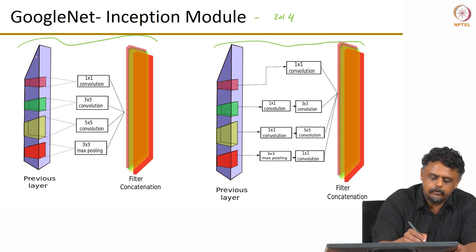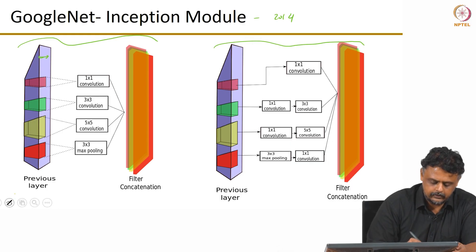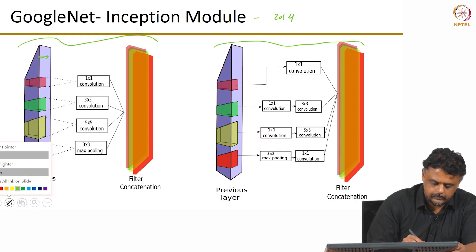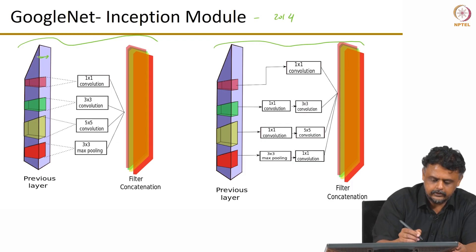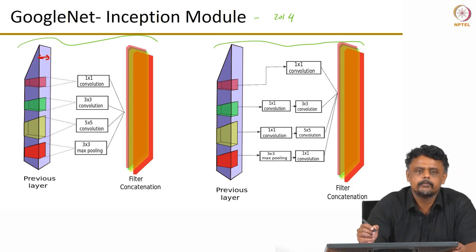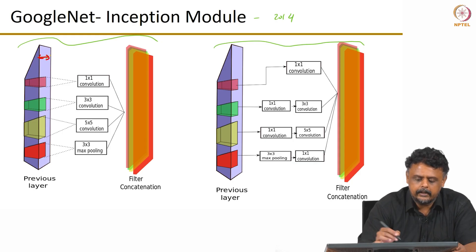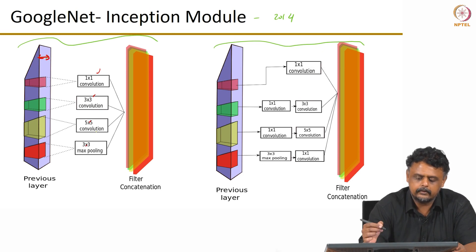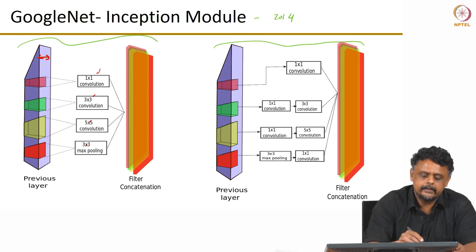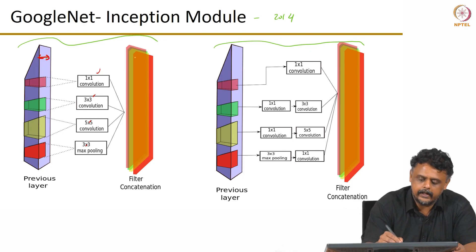So we have an input feature map — this is the thickness or depth of the feature map, some K feature maps — and we have 1x1, 3x3, 5x5, and a 3x3 max pooling also applied to these feature maps. The outputs of each of them are taken and concatenated across that depth dimension.